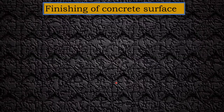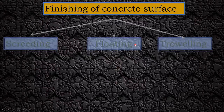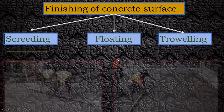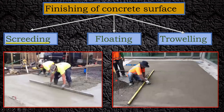In this lecture we will see how the finishing of a concrete surface has to be done. The finishing of a concrete surface involves three different operations. The first operation is called screeding, once screeding is done we need to do the floating of the surface, and once floating is done we go for the troweling.